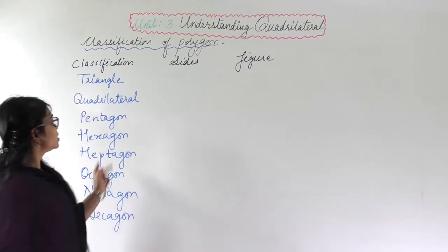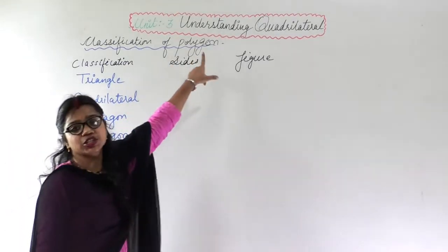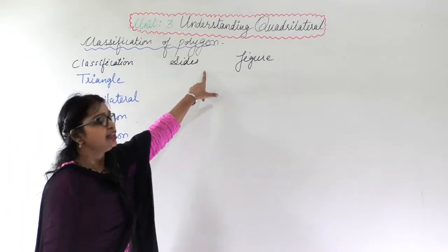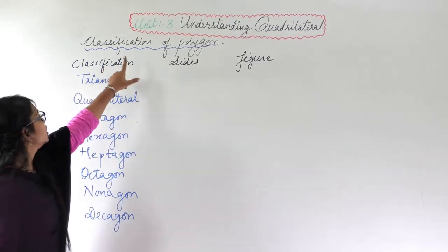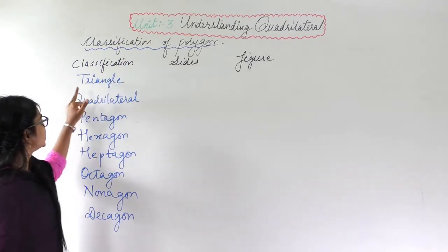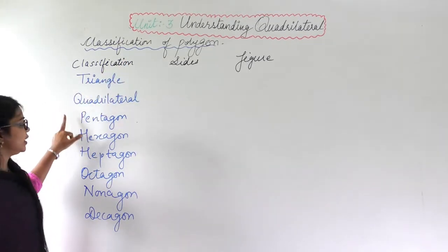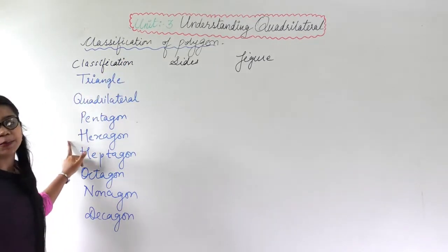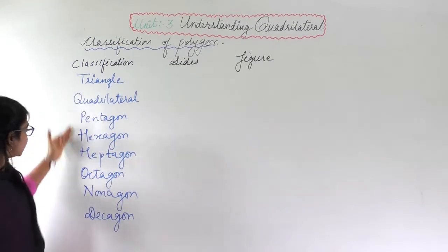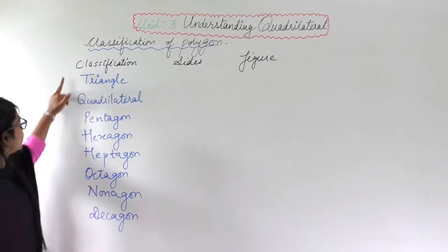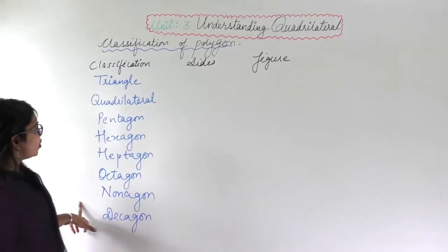Now we will study the classification of polygons. The types of polygons are: triangle, quadrilateral, pentagon, hexagon, and heptagon. These are the classifications of polygon.